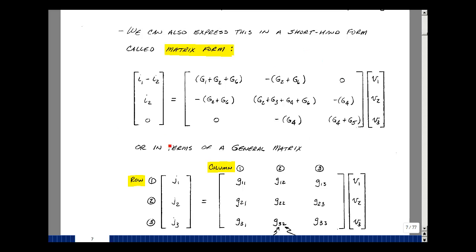Let's compare the matrix we formed back to the schematic. First, notice that the matrix is symmetric: the entry at row 1, column 2 is the same as row 2, column 1; row 1, column 3 equals row 3, column 1; and row 2, column 3 equals row 3, column 2. Also notice that all the diagonal entries are positive and all the off-diagonal entries are negative or zero. The diagonal entries are the conductances of resistances hooked up to each node: node 1 had R1, R2, and R6; node 2 had R2, R3, R4, and R6; node 3 had R4 and R5.